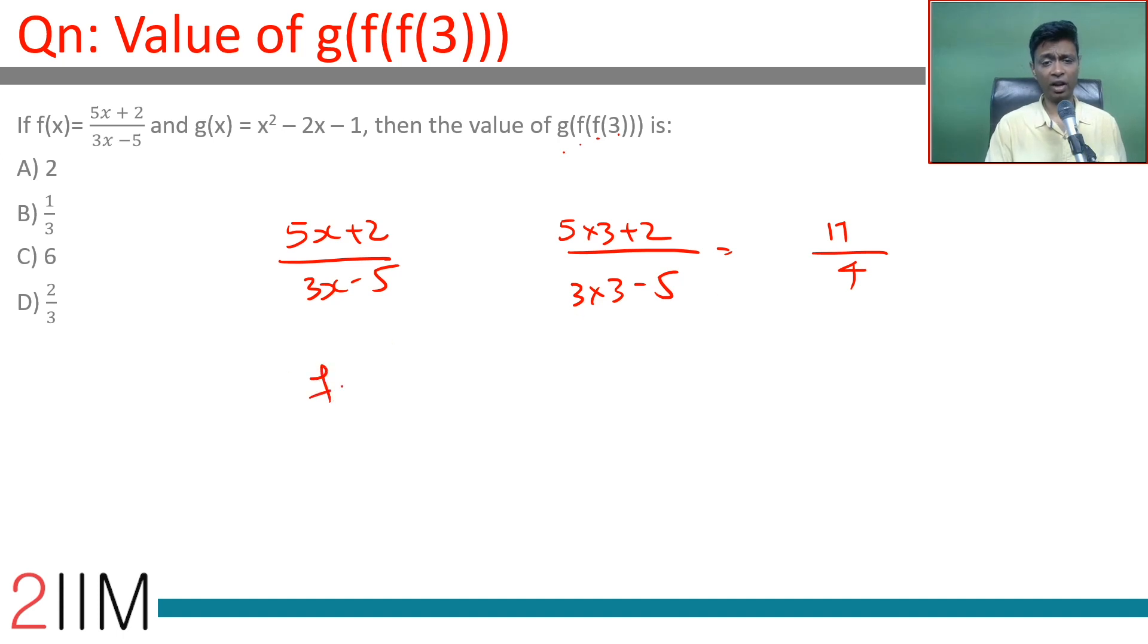It's 5 into 17 by 4 plus 2, by 3 into 17 by 4 minus 5. This is 85 plus 8 by 4, by 51... 3 into 17 is 51, minus 20.